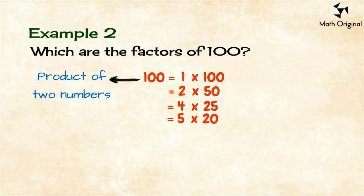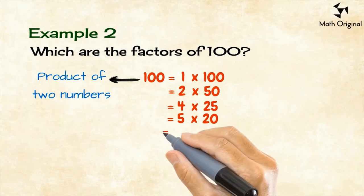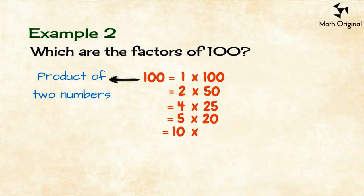Following the same logic as the example above, we'll see that numbers 6, 7, 8, and 9 are not divisors of 100. So, the next and the last divisor is 10. We get 100 equals 10 by 10.